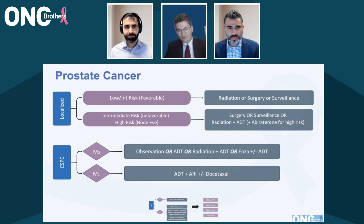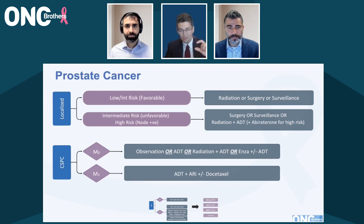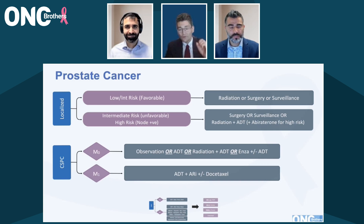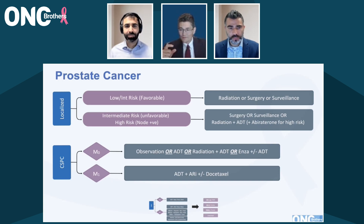The high-risk category is high-volume de novo metastatic disease. Low-risk is low-volume metachronous disease. And in the middle, you have low-volume de novo and high-volume metachronous. If you look at all the trials and the ADT monotherapy arm: for low-risk patients, median OS with ADT monotherapy is eight years; for high-risk patients, it's three years; and for intermediate risk, it's about five years. This really helps based on easy clinical criteria up front.